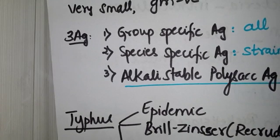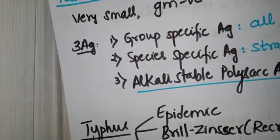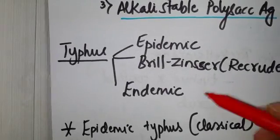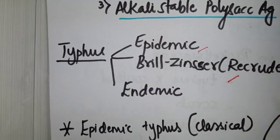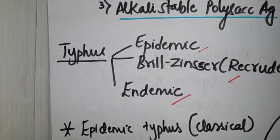These are the types of classifying them: first is typhus fever, next is spotted fever, next is scrub fever. Now in typhus fever you have three types: epidemic, Brill-Zinsser, and endemic.